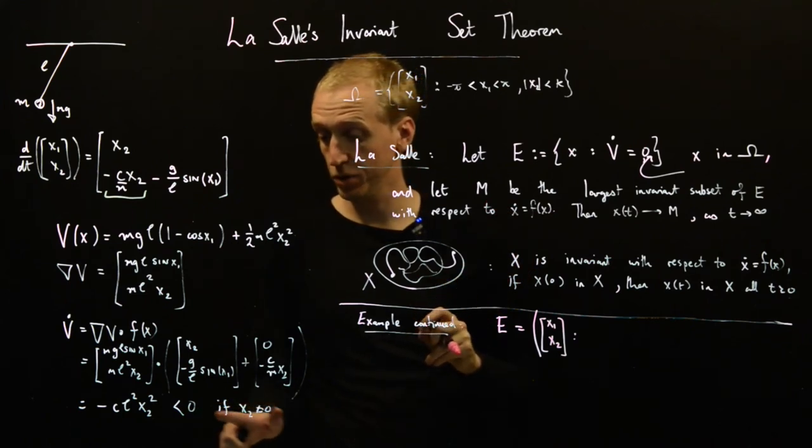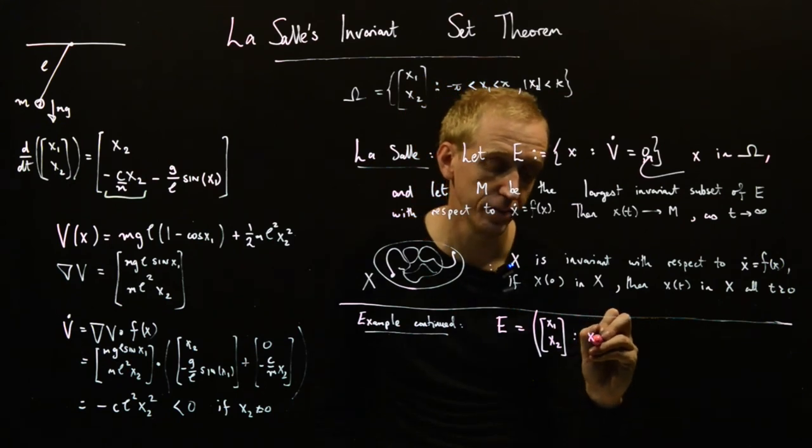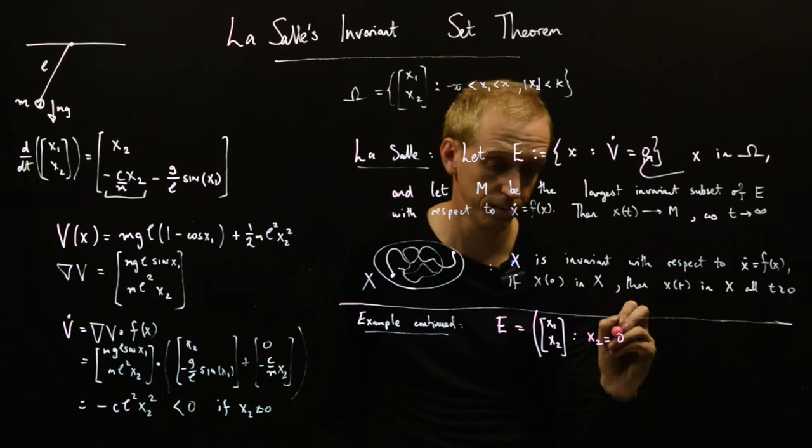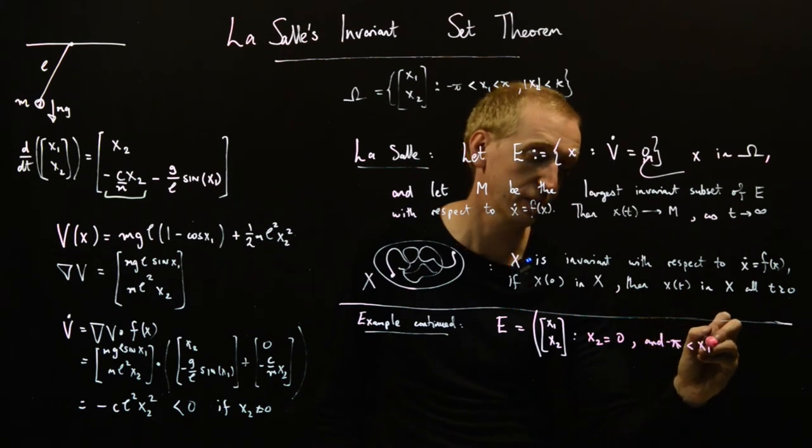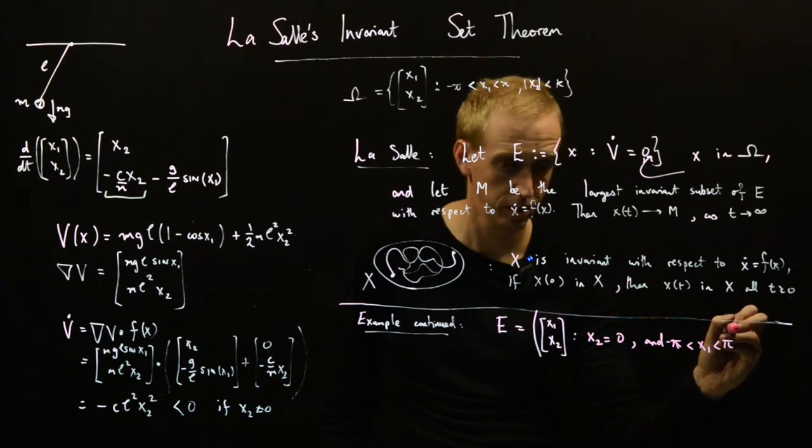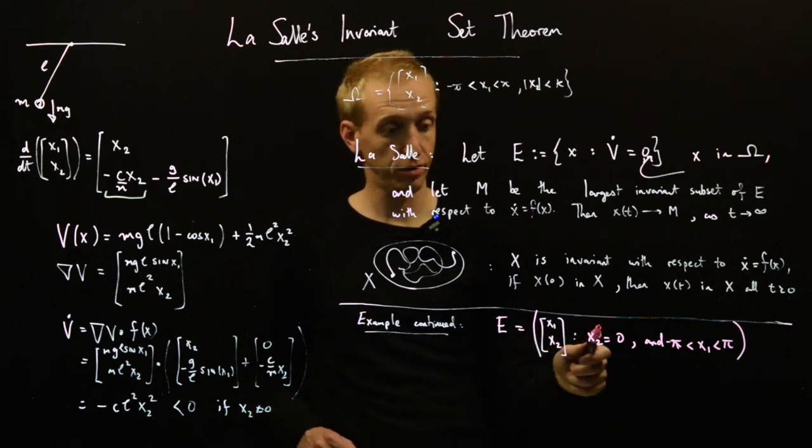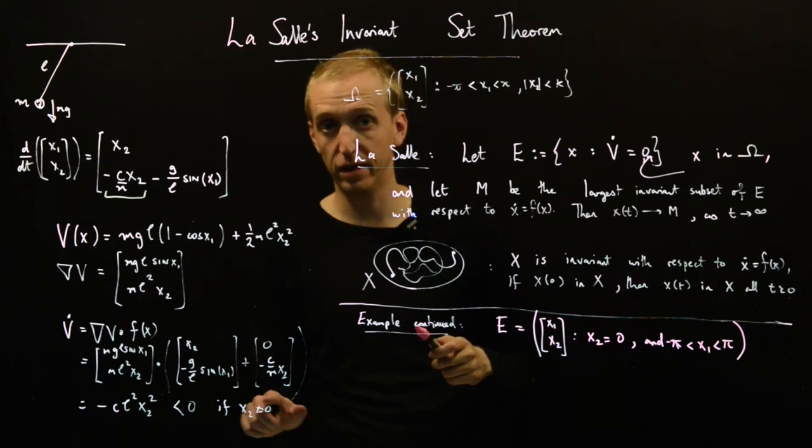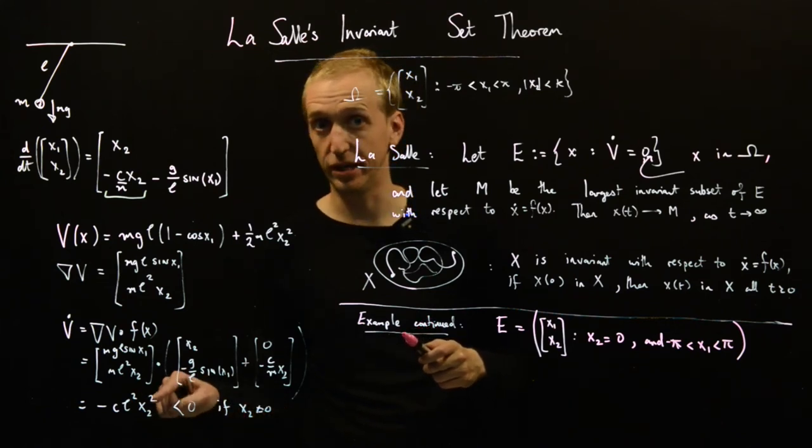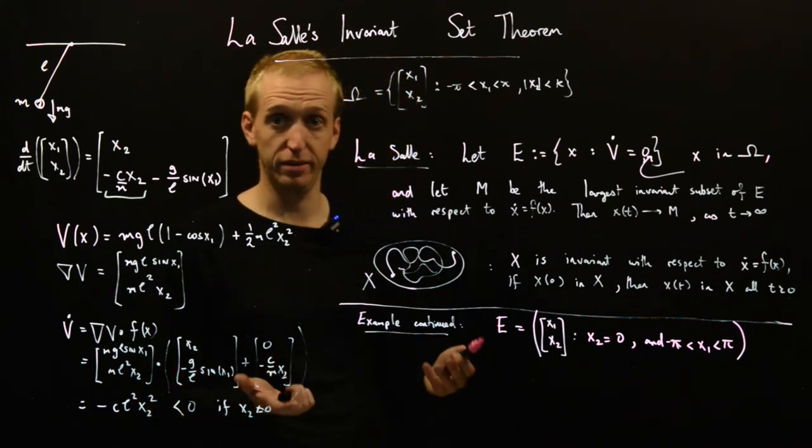And we already saw what that corresponded to here. So that corresponds to x2 is equal to zero and minus pi is less than x1 is less than pi. So this is the subset of omega for which V dot is equal to zero. So for any non-zero value of x2, we get strictness here. It's strictly less than zero, so it can't be equal to zero. And now we need to find the largest invariant set M of E.